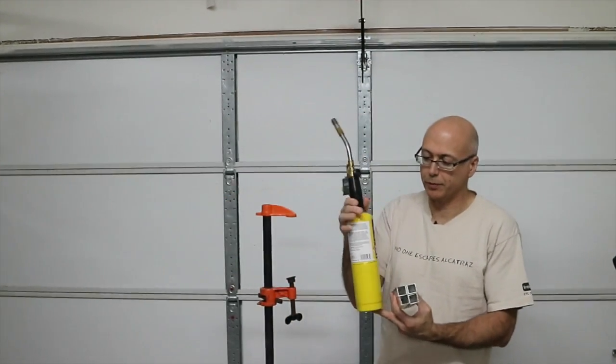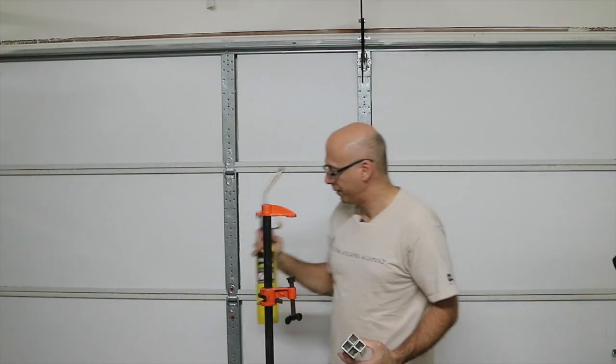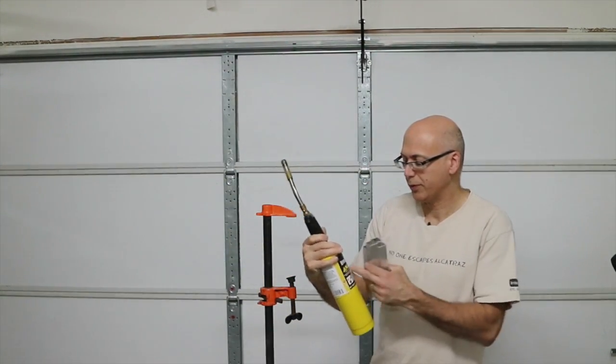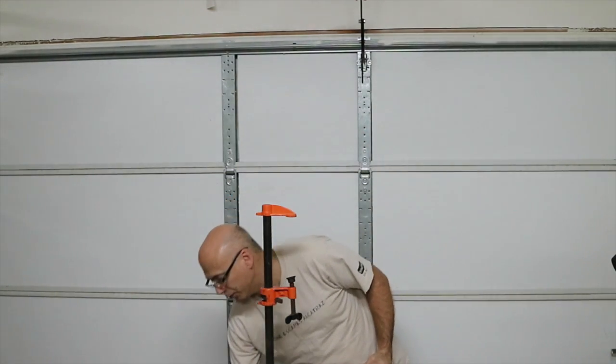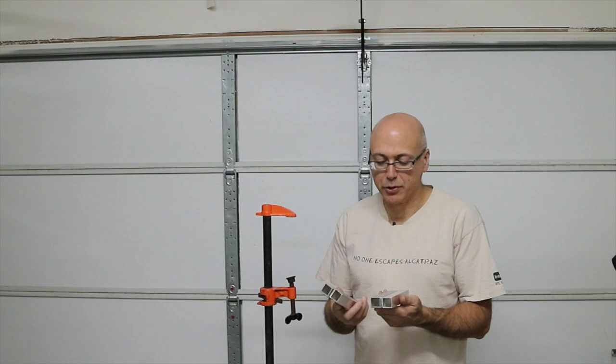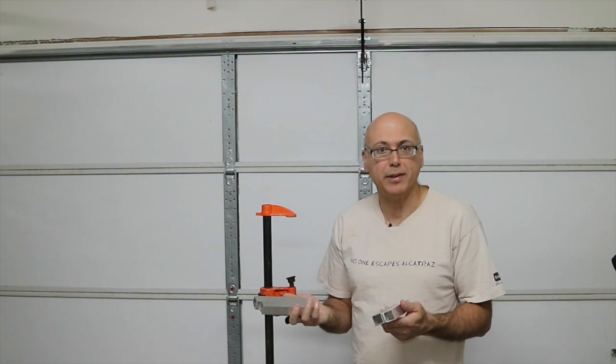Brazing torch with some map gas - I don't know if this is maybe actually a propane torch but I'm using it with map gas - and I'm going to try joining these tubes and we're going to do a strength test on this stuff.